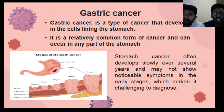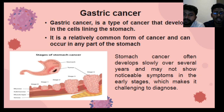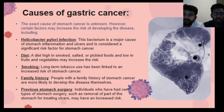Gastric cancer is a type of cancer that develops in the cells which line the stomach. It is a relatively common type of cancer and can occur in any part of the stomach. Now we will see about the causes of gastric cancer.